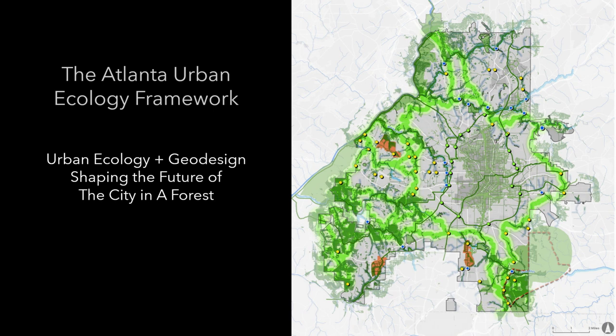And so we can continue to regenerate the social and ecological systems of our cities. This shows one example of a process and a project outcome of how the science of urban ecology and geodesign are married to help shape the future of the city in a forest — to make a future that is both more vibrant and verdant for its citizens. Thanks very much.